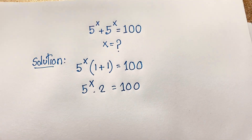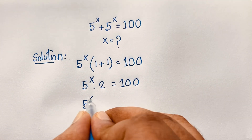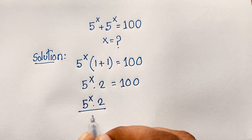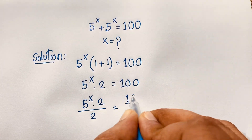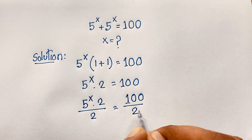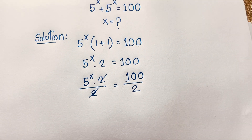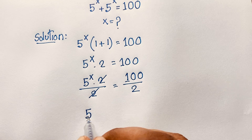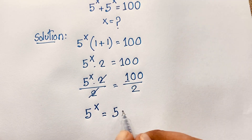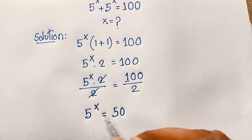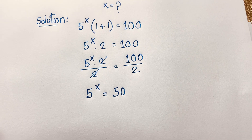Now I divide both sides by 2. So 5 to the power x times 2, divided by 2 — the twos cancel out — and 100 divided by 2 is 50. So we find that 5 to the power x is equal to 50.